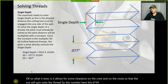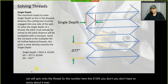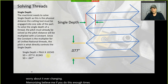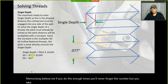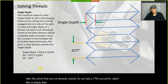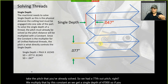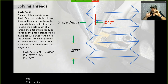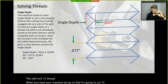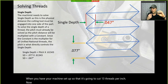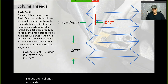You don't have to worry about this number ever changing — if you do this enough times, you'll never forget 0.61343. We had a 77-thou pitch; we multiply that by this constant and we get a single depth of 47 thou. If you're cutting a half-inch 13 thread and your machine is set for 13 threads per inch, you just need to know the RPM and engage your split nut.